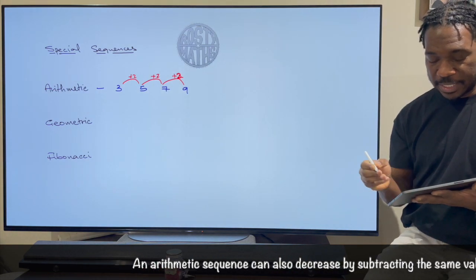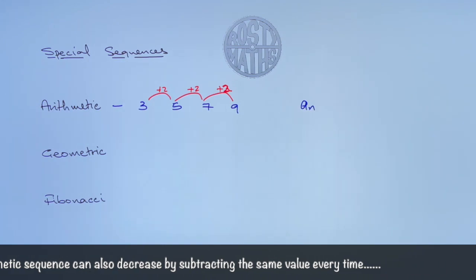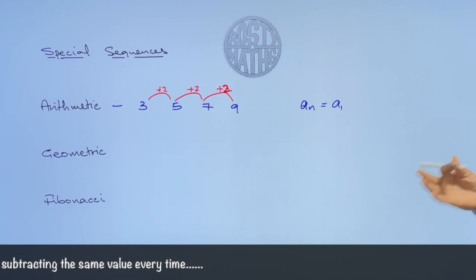And I'm just going to throw in here that the nth term of an arithmetic sequence, An we call it, is A1 which is the first term plus n minus 1 times d.